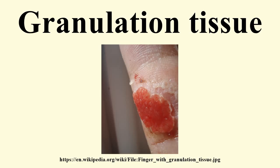The extracellular matrix of granulation tissue is created and modified by fibroblasts. Initially, it consists of a network of type 3 collagen, a weaker form of the structural protein that can be produced rapidly. This is later replaced by the stronger, long-stranded type 1 collagen, as evidenced in scar tissue.